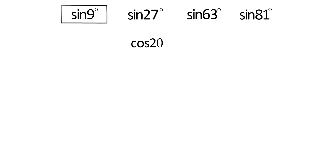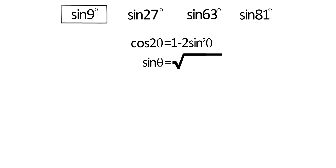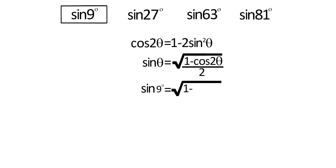We know that cos 2θ = 1 − 2 sin²θ. This gives us sin θ = √((1 − cos 2θ) / 2). So sin 9° = √((1 − cos 18°) / 2).